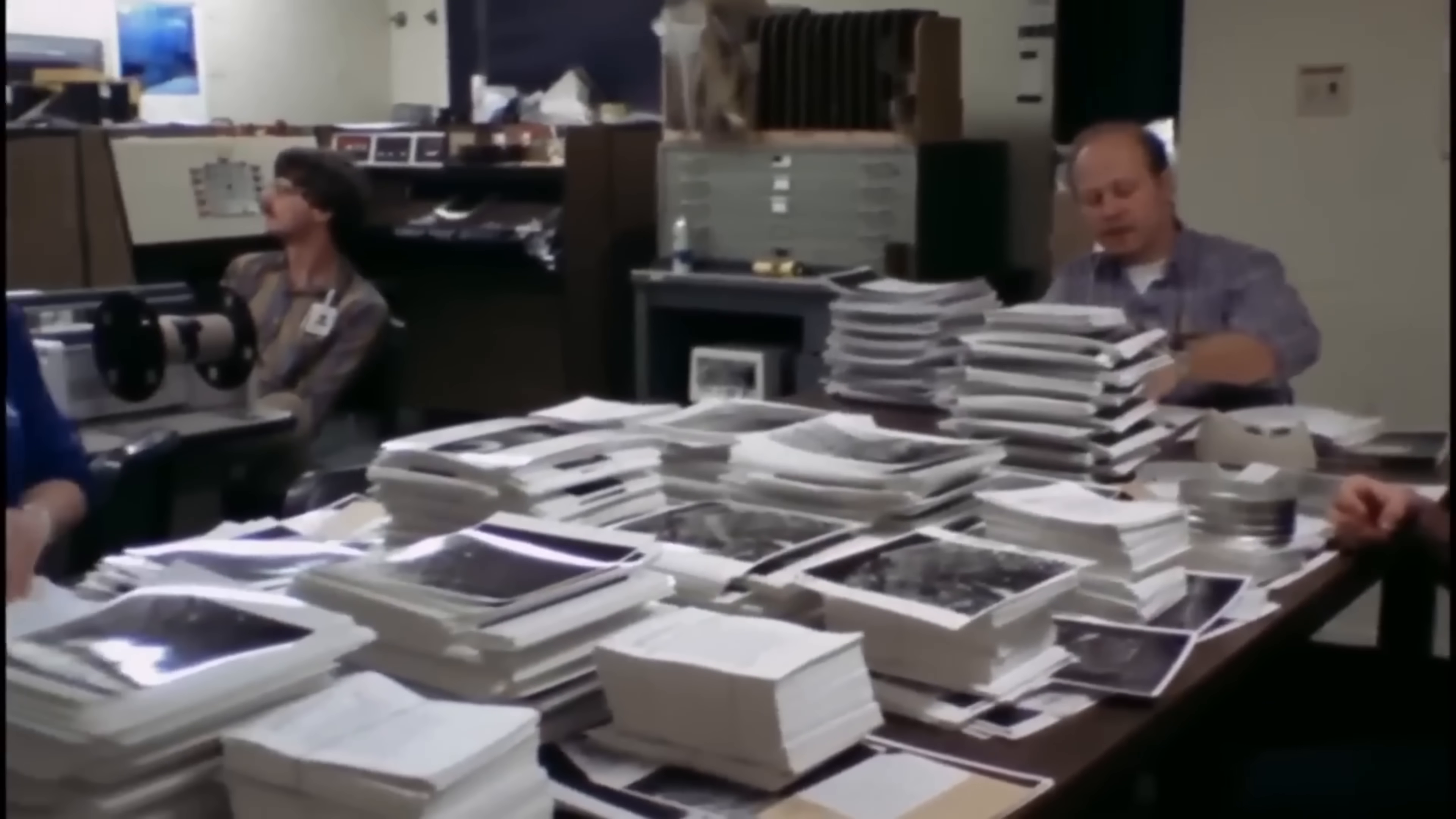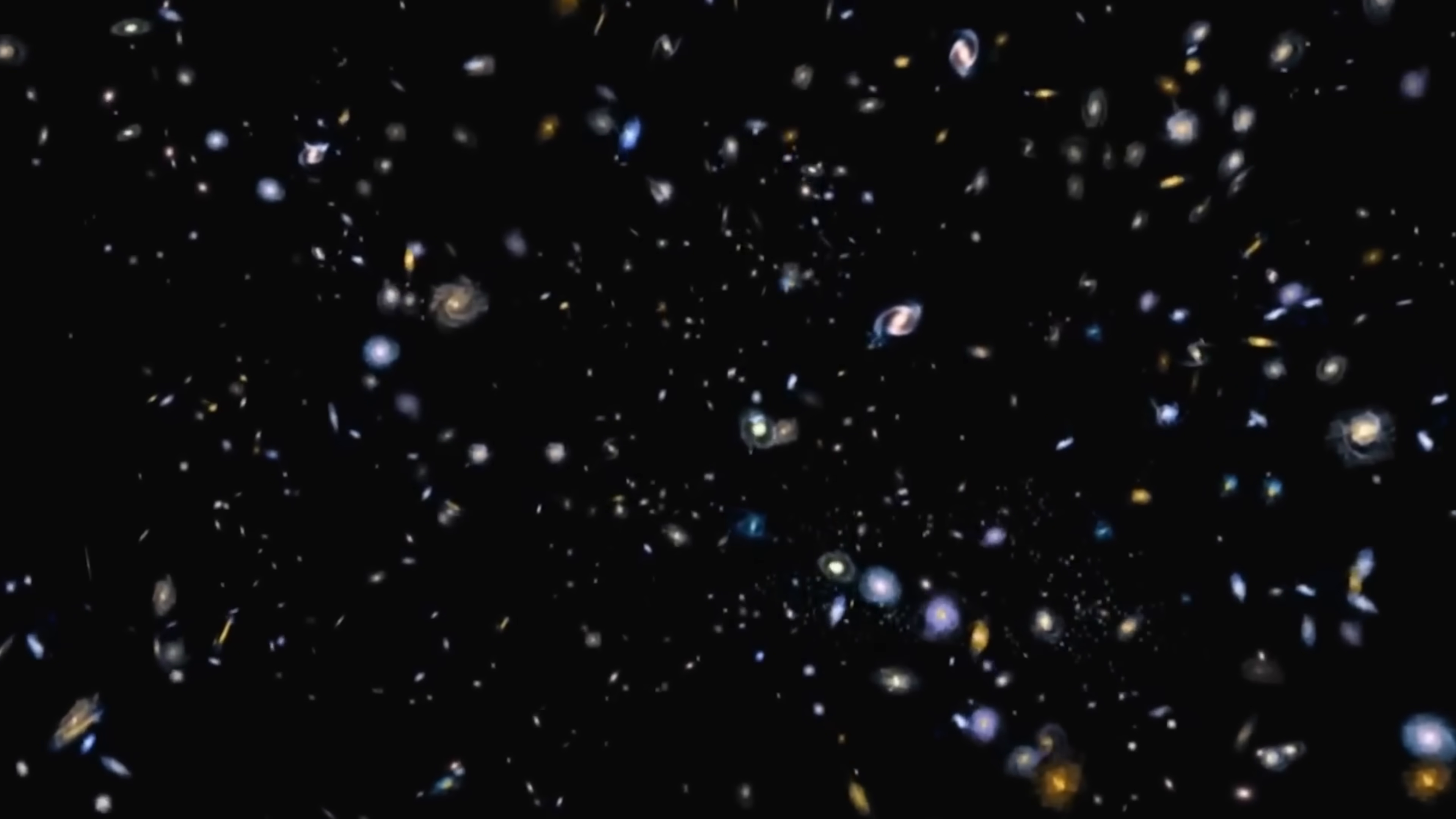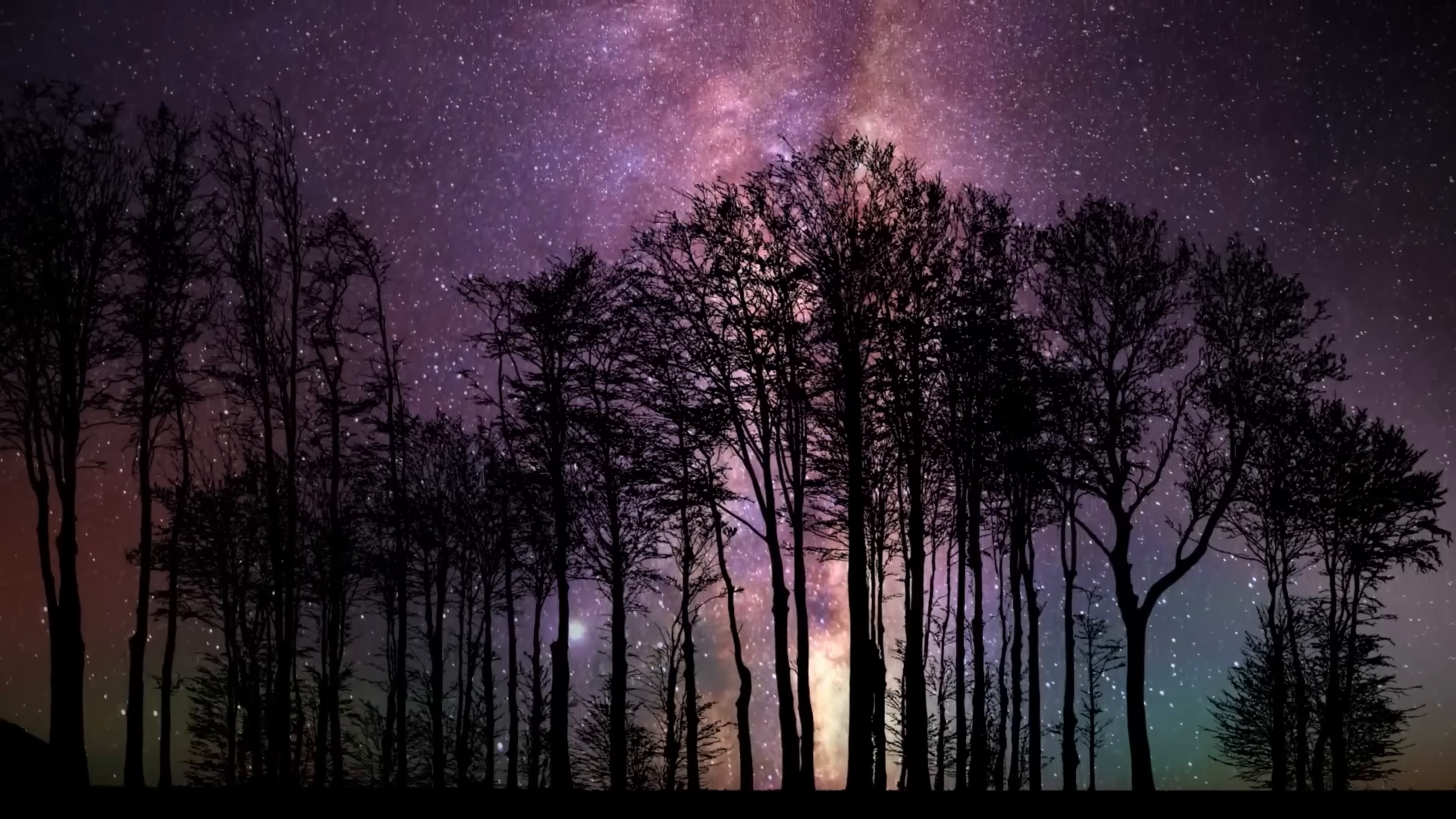But here's where it gets wild. Direct measurements using supernovae, red giants, gravitational lenses, and variable stars suggest the real number is closer to 73 kilometers per second per megaparsec. That's 264,000 kilometers per hour, and a massive 20,000 kilometers per hour faster than what our best theories predict.